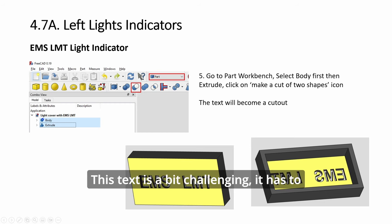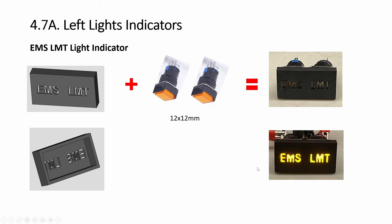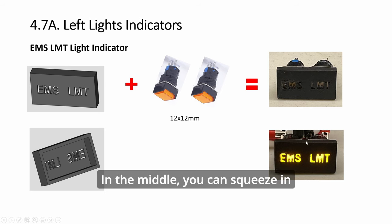This text is a bit challenging - it has to be of a certain size. If it's too small, the result will not be good. This is the maximum I can squeeze into this size. We have two yellow lights, although here it looks orange, one for each of the text. It will be a tight fit. In the middle you can squeeze in something to make it an even tighter fit.